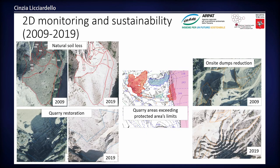Here we have some examples of these kinds of changes. We have the border of a natural area which is affected by extraction activity and dump disposal — a case of non-compliance with protected area limits. In the first case, we have a piece of natural rock that in 10 years has been covered by waste dumps. On-site dump reduction can also occur by opening of new quarries.